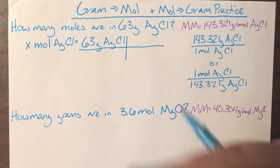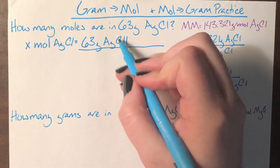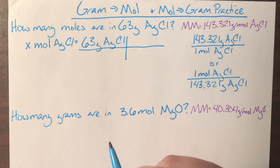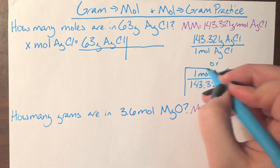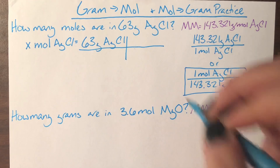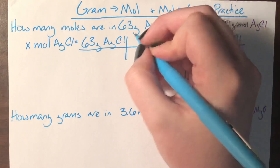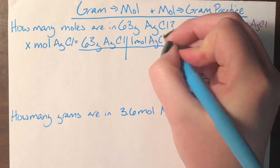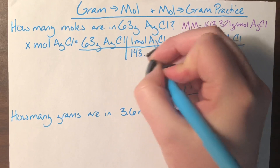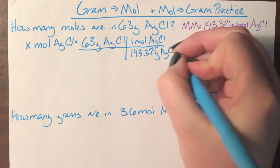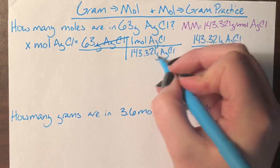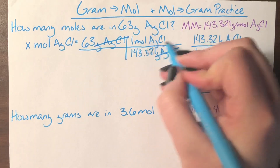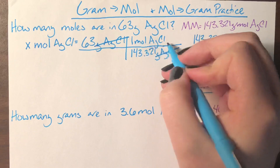I get to pick which conversion factor to use. We pick the one that allows us to cancel out the unit we need to cancel. The unit I need to cancel is on top of our train track — I see grams on top — which means I need the conversion factor with grams AgCl on the bottom. That's the lower one, so I'll box it and plug it in: one mole of silver chloride on top and 143.321 grams of silver chloride on the bottom. Grams silver chloride cancels, and the only unit left is moles AgCl.